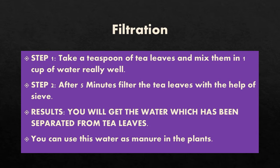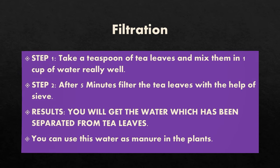Now let's look at the steps for the activity of filtration under separation of substances. In step 1, take a teaspoon of tea leaves and mix them in 1 cup of water really well. After 5 minutes, filter the tea leaves with the help of a sieve. The result is that you will get water separated from the tea leaves, which you can use as manure for plants.